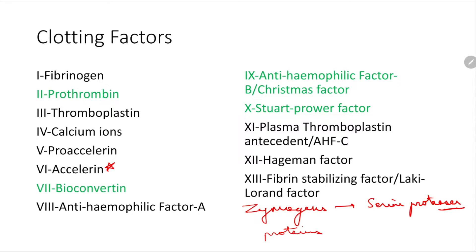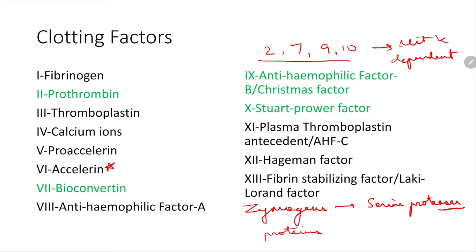You will notice that factors 2, 7, 9, and 10 are highlighted — these are the vitamin K dependent factors. So if you get a question about deficiency of vitamin K affecting which clotting factors, remember: 2, 7, 9, and 10. Phytonadione is the chemical term for vitamin K, so the original question asks which factor is not vitamin K dependent, and that is factor 6, since the vitamin K dependent factors are 2, 7, 9, and 10.